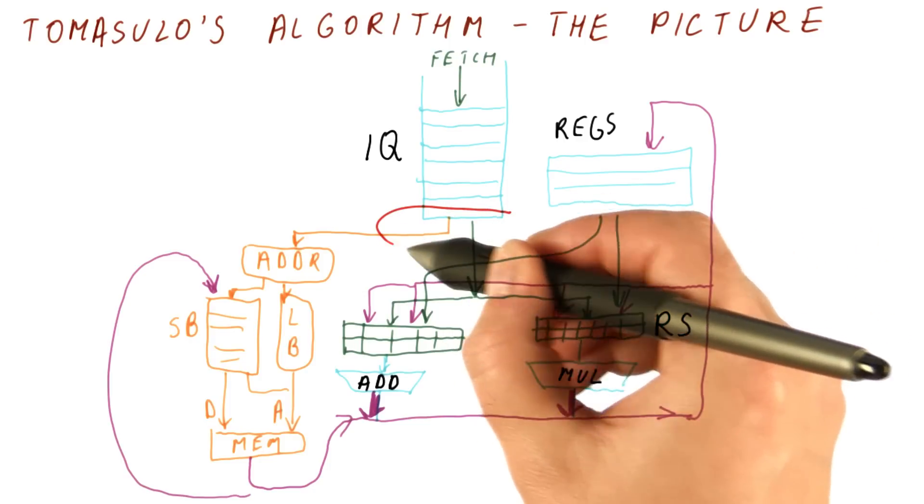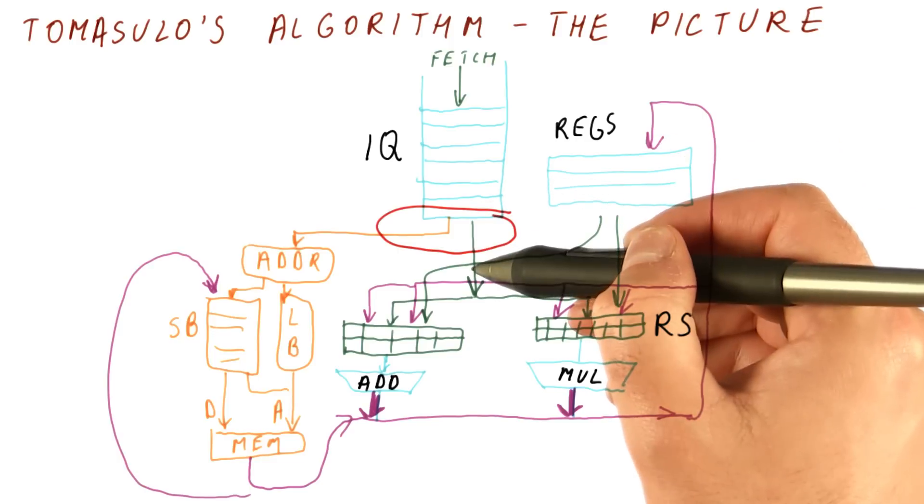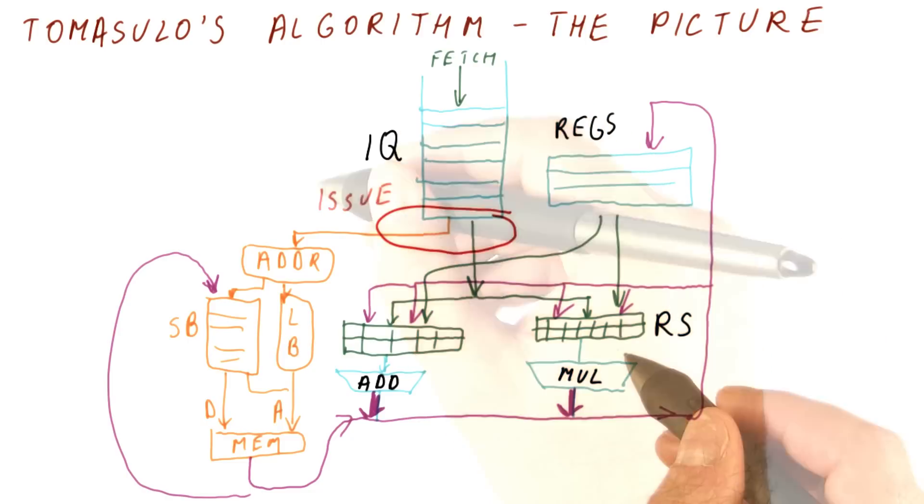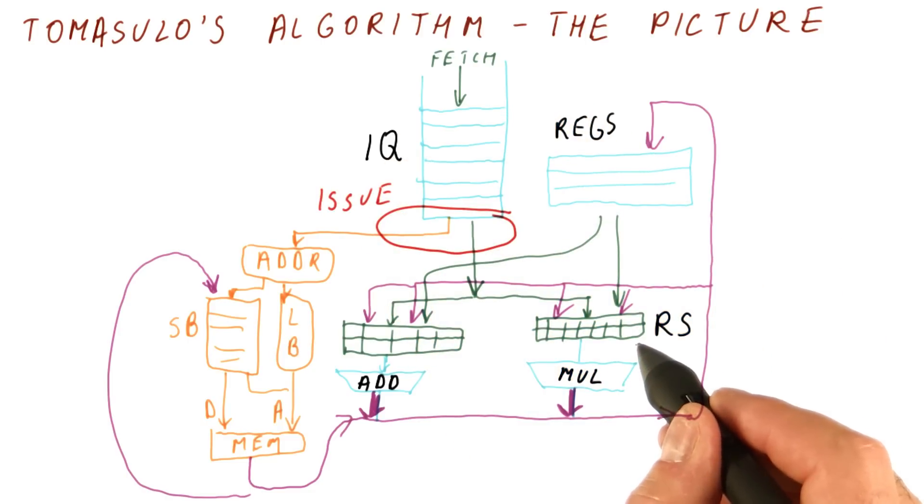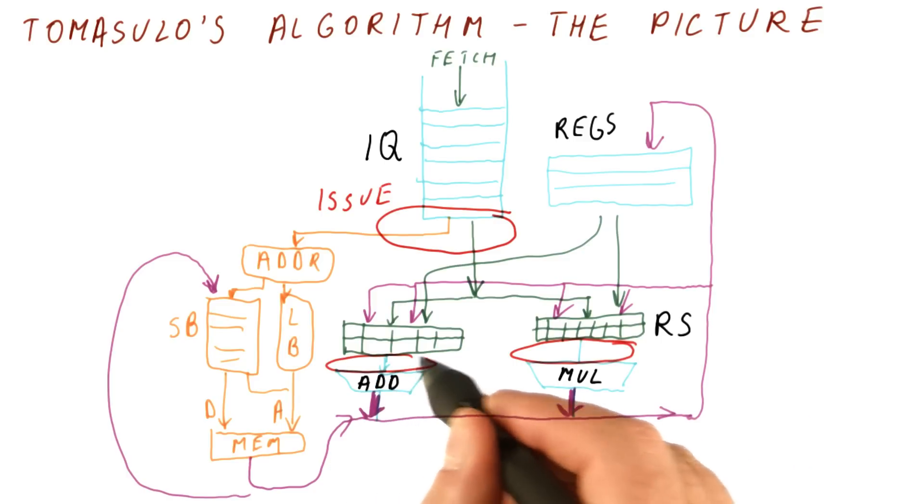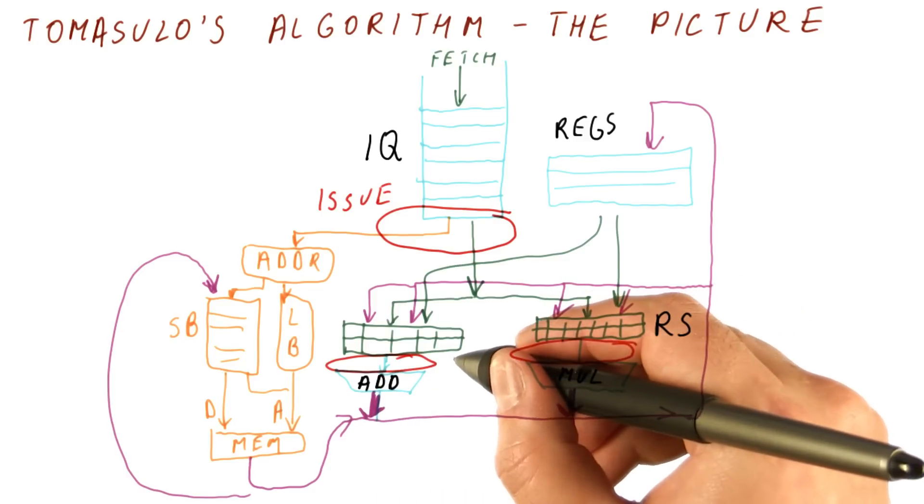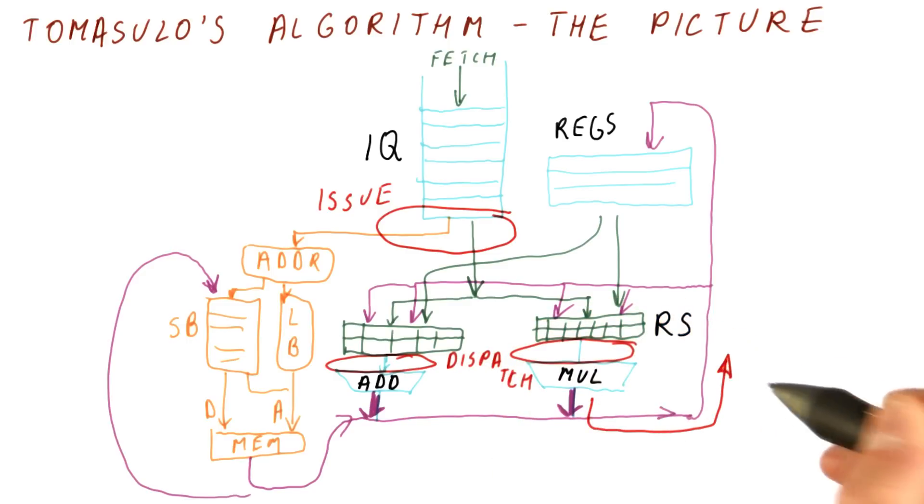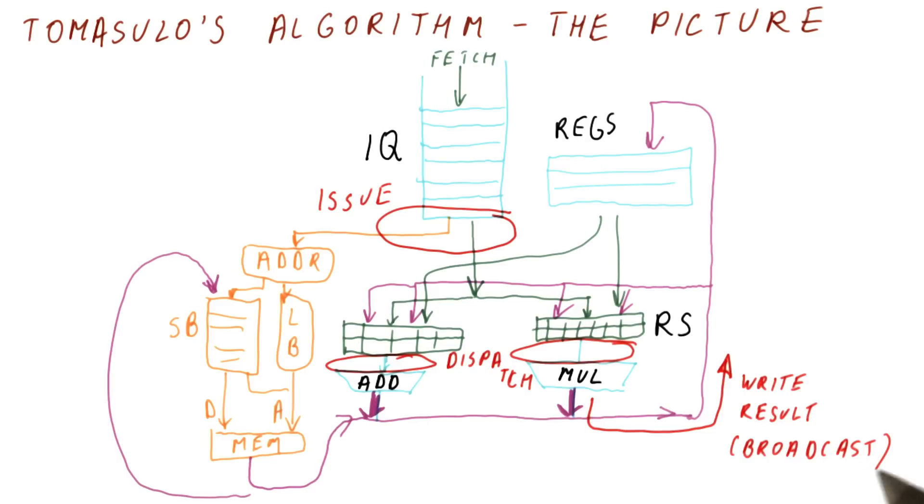This part here where we send the instruction from the instruction queue into the reservation station and the load-store unit is called issue. When the instruction is finally sent to execution from a reservation station, it's called dispatch. And when the instruction is ready to broadcast its result, we call that write result or simply broadcast.